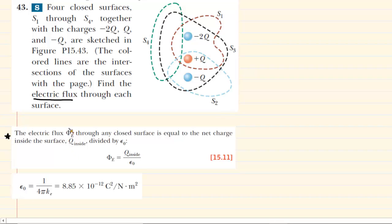It says that the electric flux, symbolized by this Greek letter here, through any closed surface is equal to the net charge inside of that surface, which would be this symbol right here, divided by a constant, epsilon.